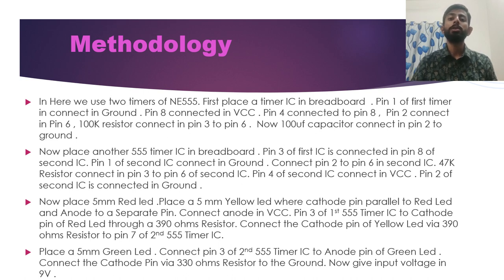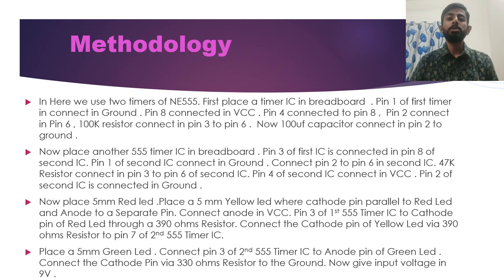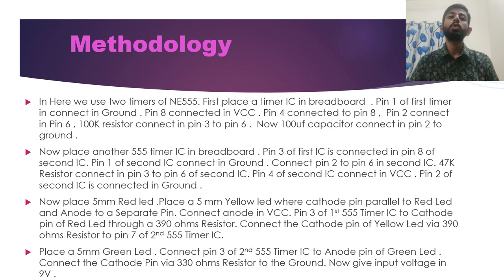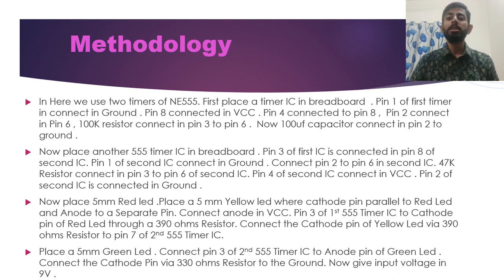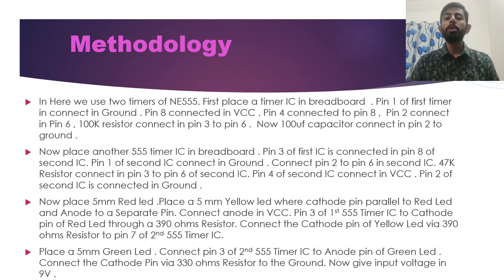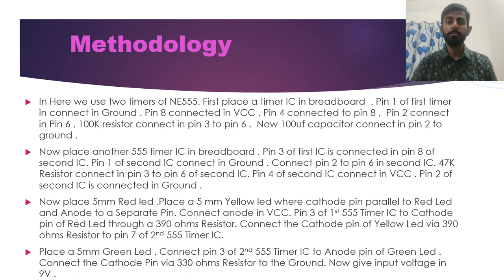Pin 3 of the first 555 timer IC connects to the cathode pin of the red LED through a 390 ohm resistor. The cathode pin of the yellow LED connects through a 390 ohm resistor to pin 7 of the second 555 timer IC. We then place a 5mm green LED and connect pin 3 of the second 555 timer IC to the anode of the green LED, with the cathode through a 330 ohm resistor to ground. We give an input voltage of 9 volts and observe the results.